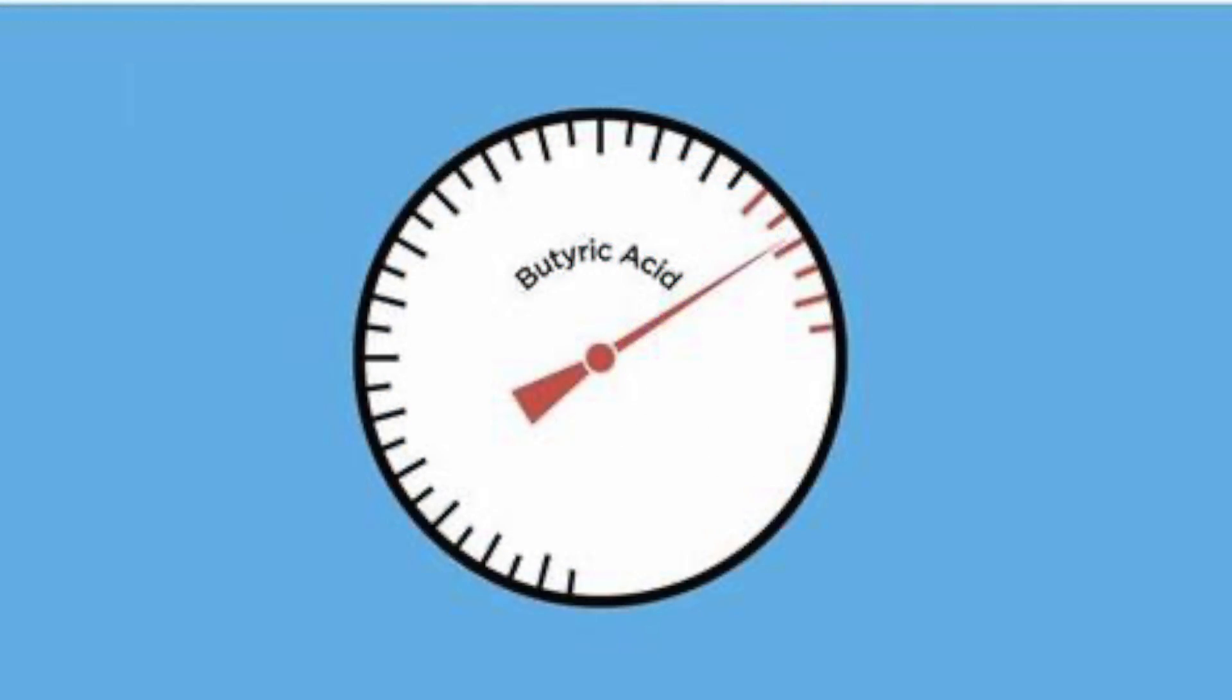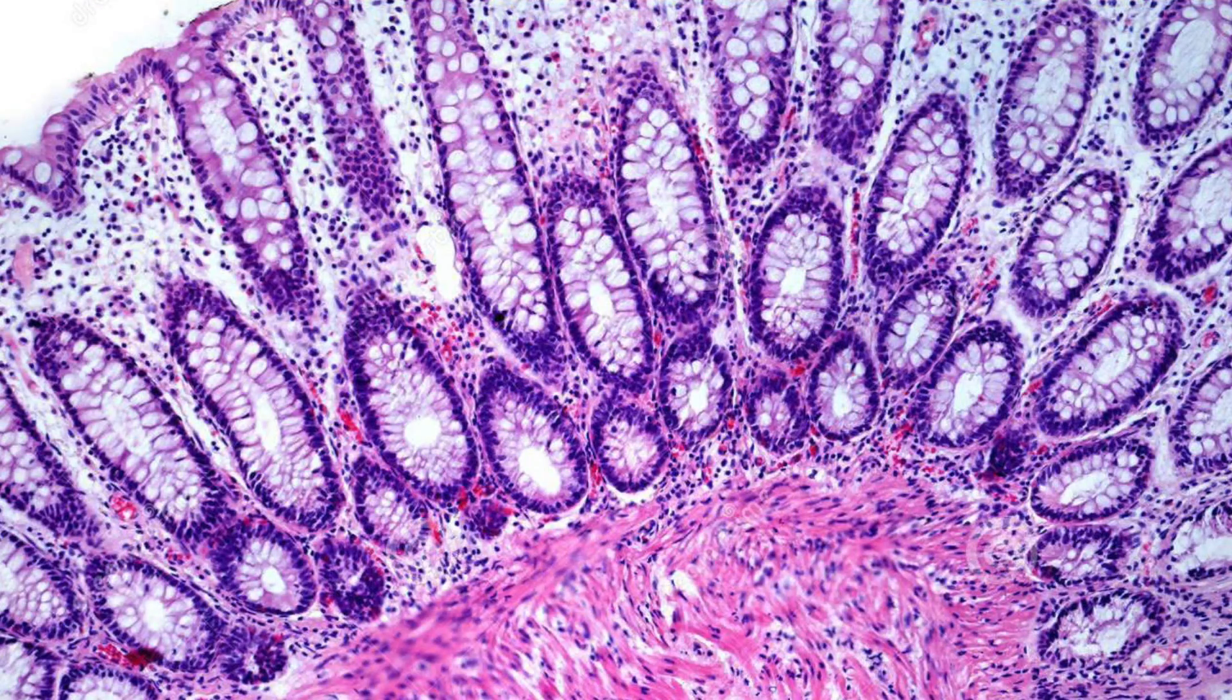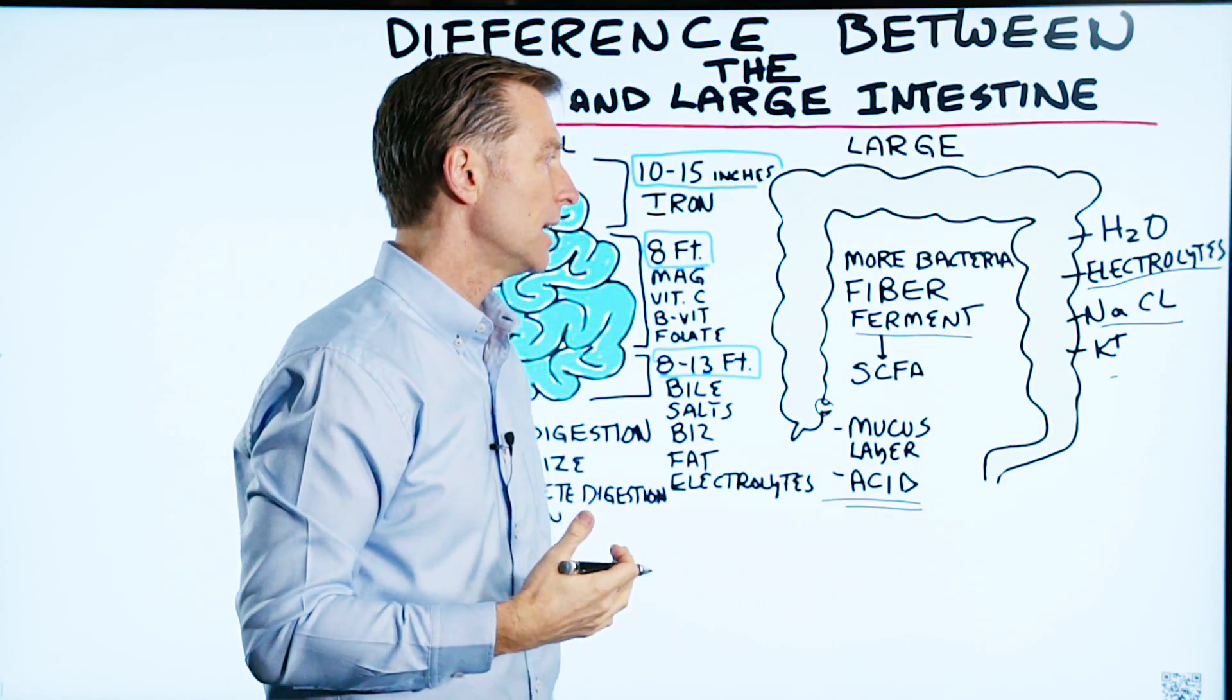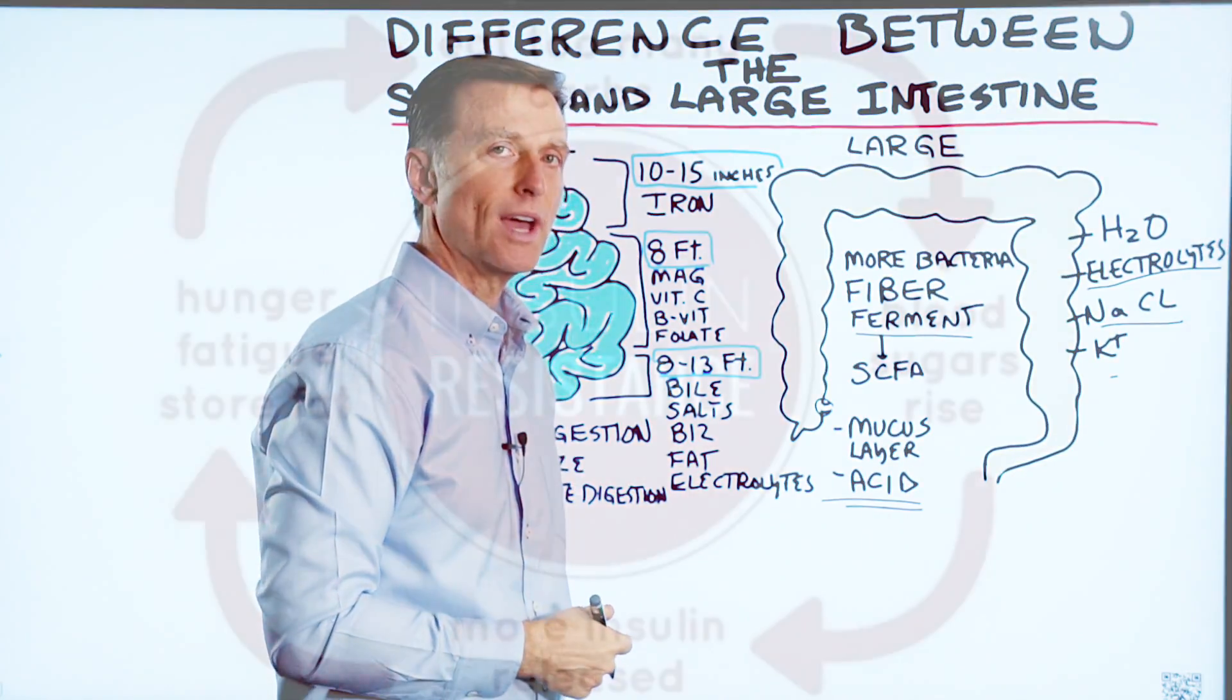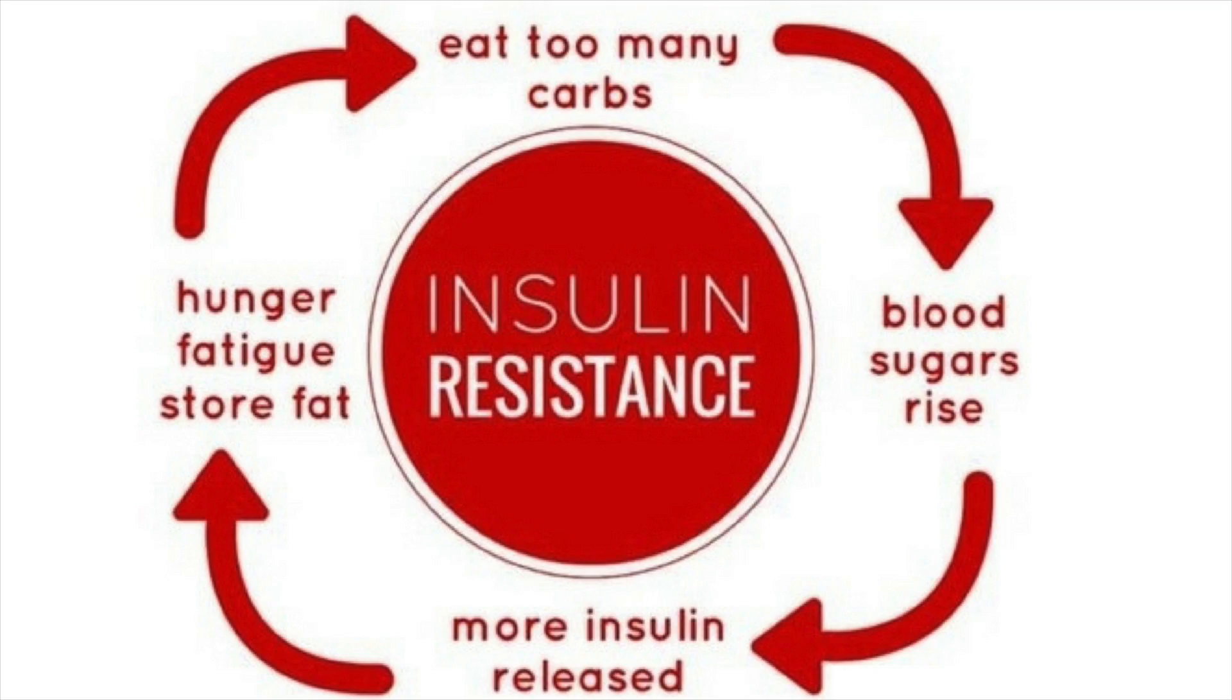And butyrate actually is a preferred fuel for the colon cells, even over glucose. Butyrate also helps stabilize your blood sugars. It will give you energy and it will improve insulin resistance.